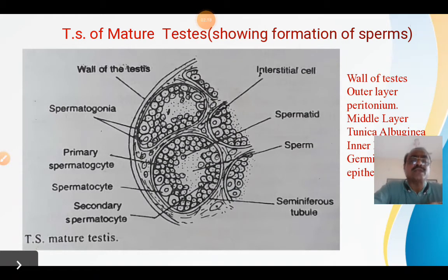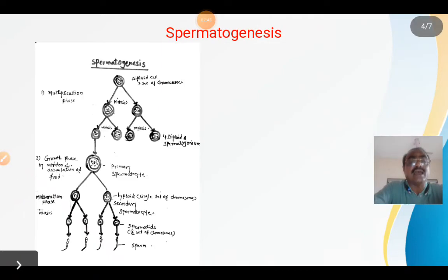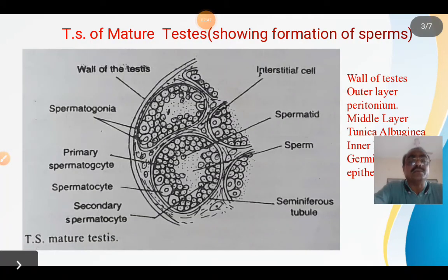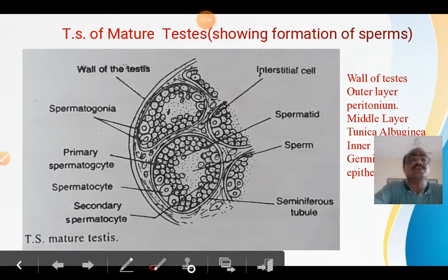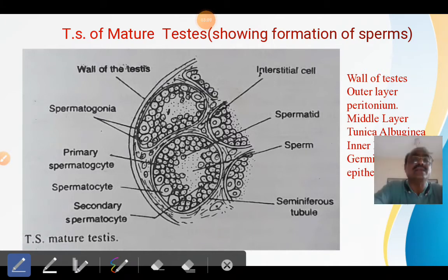Before starting spermatogenesis, let us look at what histological changes take place inside the testis during its maturation. When the testis matures, particular histological changes take place inside it, after which spermatogenesis occurs and sperms are formed. I will explain in detail how the testis becomes matured and what histological changes take place inside the testis.